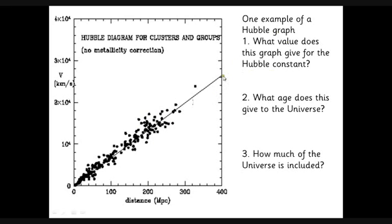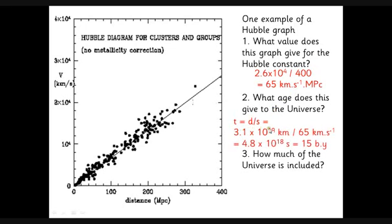We can get another value from the graph. Here's our velocity, just over 2.6 times 10 to the 4 kilometers per second at 400 megaparsecs away. That gives us the value we want: 65 kilometers per second per megaparsec. If you look at the units, we've got kilometers per second per megaparsec. Kilometers and megaparsecs are both units of distance, so they actually cancel each other out.